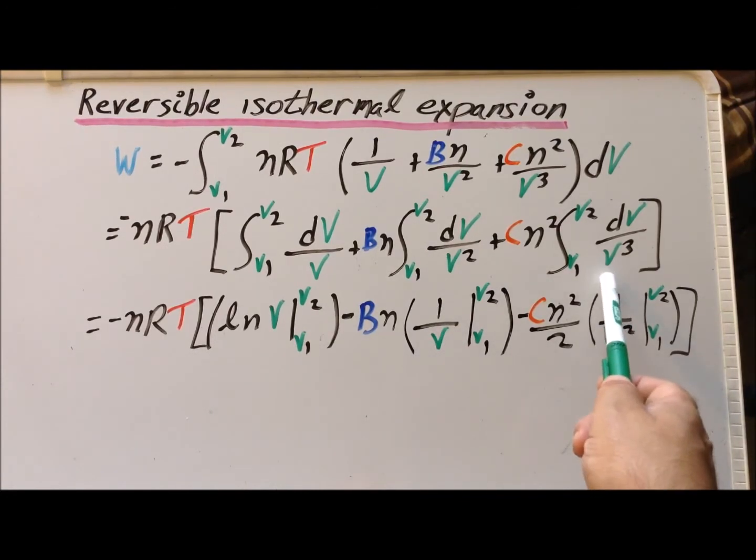Lastly, we have one over V cubed, which is equivalent to V to the minus three power. The antiderivative is minus V to the minus two over two, which is minus one over two V squared. We evaluate each of these integrals between the limits of V1 and V2, and recall we have minus nRT as a factor in front.